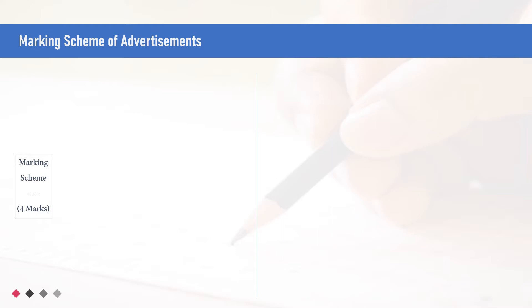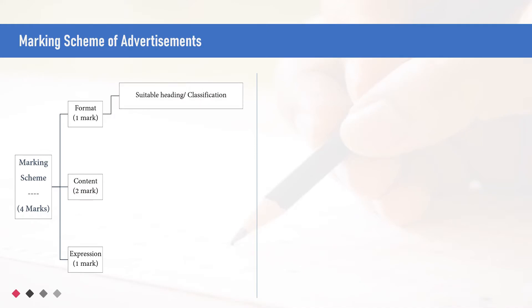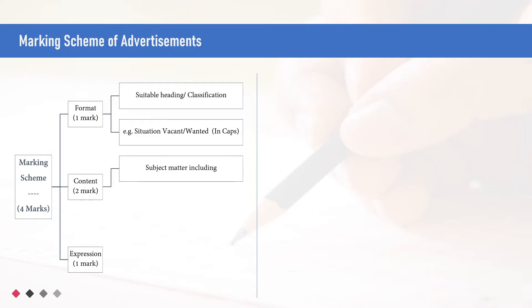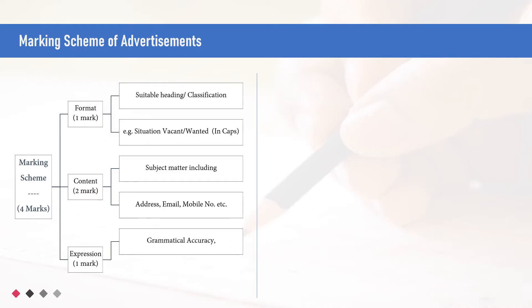Marking scheme of advertisements: Out of 4 marks, 1 mark is allocated for format, 2 for content, and 1 for expression. Format includes suitable heading or classification — for example, Situation Vacant or Situation Wanted — written in capitals. Content includes subject matter including address, email, mobile number, etc. Expression includes grammatical accuracy, spelling, and suitable style.